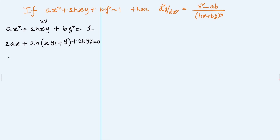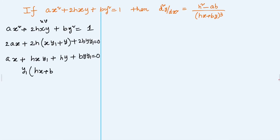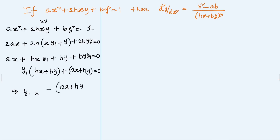Cancelling 2 throughout, we have ax + h(x·y₁ + y) + by·y₁ = 0. Taking y₁ common: y₁·(hx + by) + ax + hy = 0. Therefore y₁ = -(ax + hy) / (hx + by).